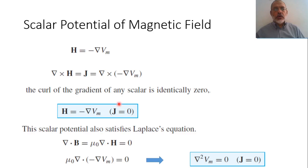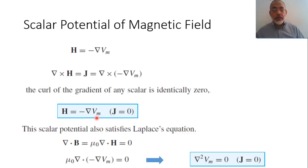The representation of the magnetic field in terms of the scalar magnetic potential is valid only in any space where the current density J equals zero. This is quite important in solving the problems of machines like motors, generators, and transformers. So the scalar magnetic potential is basically used for solving machine problems.